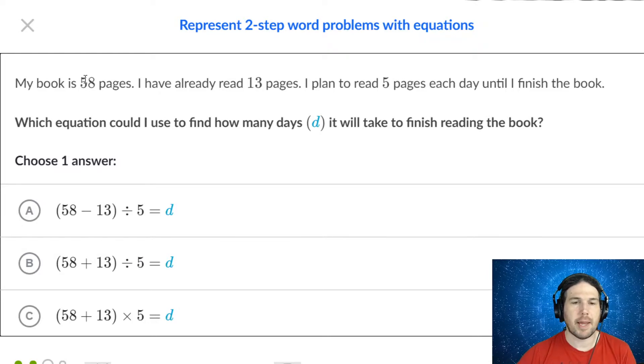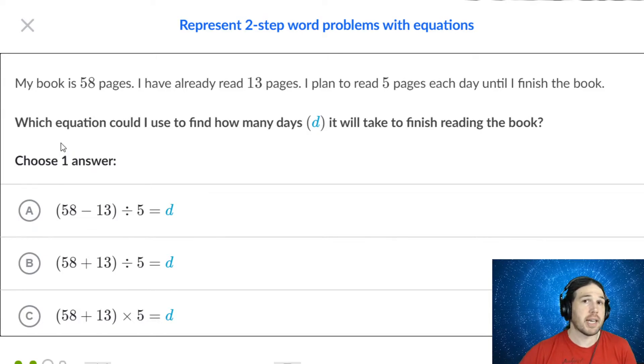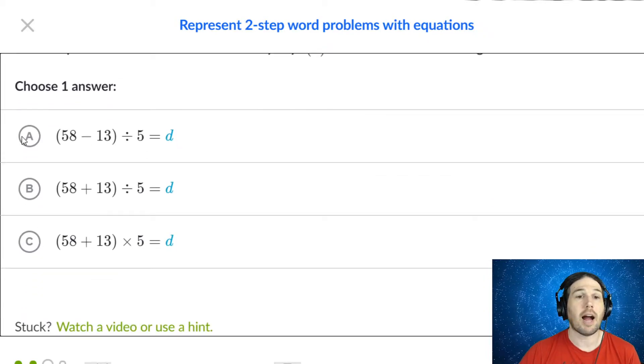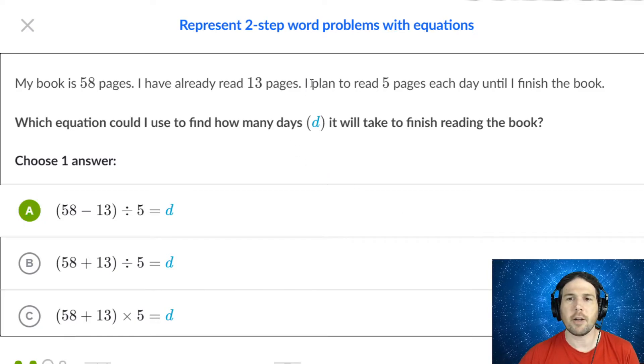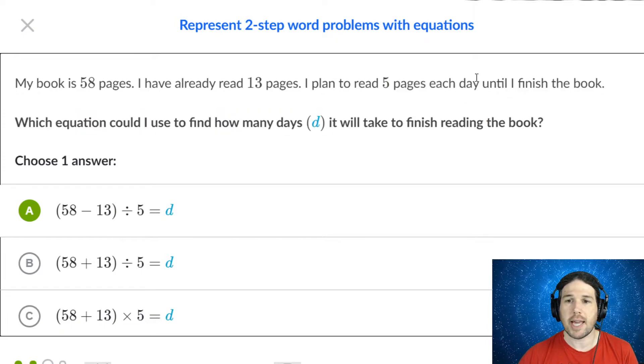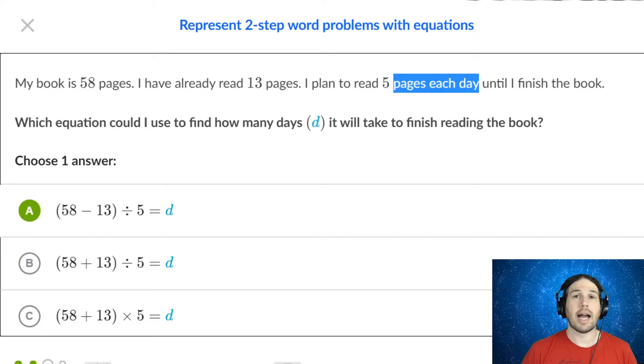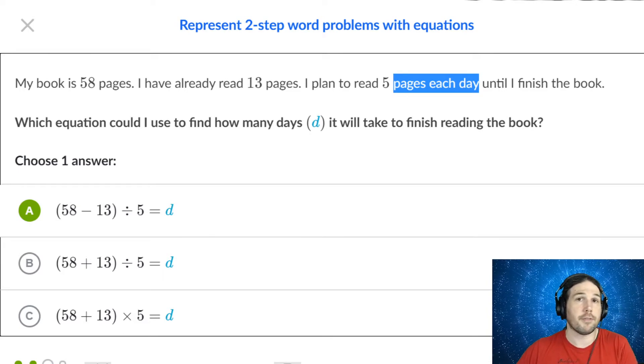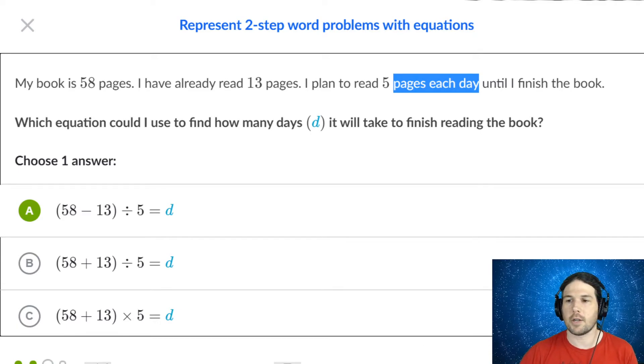My book has 58 pages. I've already read 13. So I'm going to be doing 58 minus 13. I assume we're going to be talking about how many pages we still have to go. So 58 minus 13, I've already got our answer. It's A. But let's go ahead and keep looking anyway. I plan on reading five pages each day. I like this phrasing, pages each day. It's another fancy way of saying divide. I am dividing the number of pages that I have left into a certain number of days. This is division. So we are dividing by five, which is why A is the correct answer.